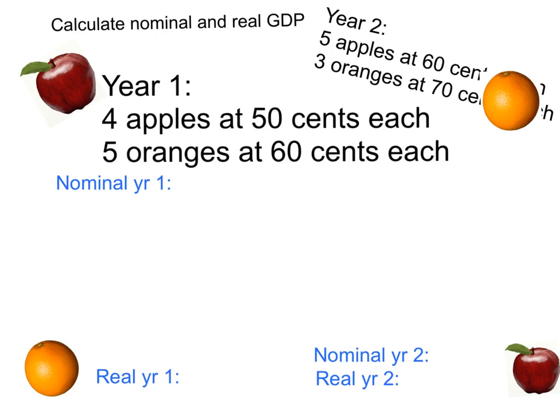So let's calculate, first of all, the nominal GDP in year one. To calculate nominal GDP, you just simply multiply the quantities of the product produced, so four apples, and you multiply it by the price, 50 cents. So let's do four times 50 cents.